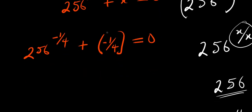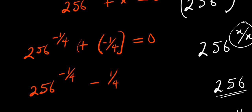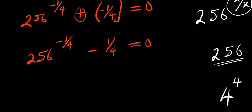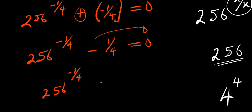Remember, plus times minus is minus. We have 256 power negative 1 over 4, minus 1 over 4, because this plus multiplies this negative, equals 0. So I can simply move this over here, and because positive 1 over 4, I have 256 power negative 1 over 4 equals 1 over 4.